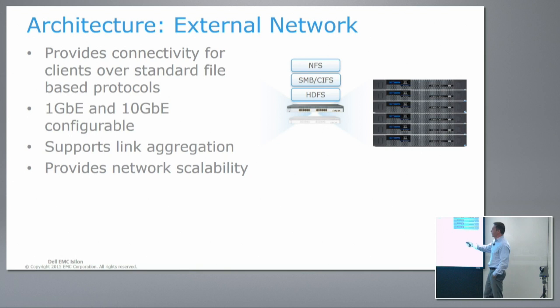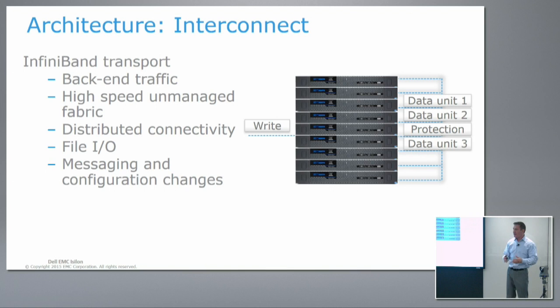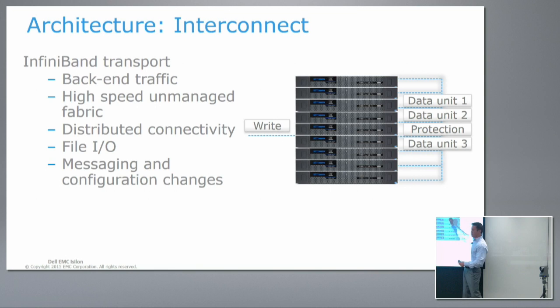We provide link aggregation for higher performance and redundancy. On the back end, we use InfiniBand as the back-end transport, providing all connectivity between nodes. When you request a file from a node, remember that file is striped across many nodes. The nodes collaborate over the back-end InfiniBand network — they lock the file and retrieve each portion sequentially to give you access. The backplane is really what connects all the nodes into a cluster.